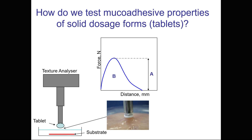When mucosal dosage forms are developed, they always need to be tested — in particular we need to evaluate their adhesive properties. To do that, we normally use ex vivo experiments where we take mucosal tissue from animals, for example pig mucosal tissue from the local abattoir. We then use a method called the tensile test, applicable for testing the adhesive properties of tablets, using an instrument called a texture analyzer. On a mobile probe of this texture analyzer we attach our mucoadhesive tablet, then use pig cheek tissue as a substrate.